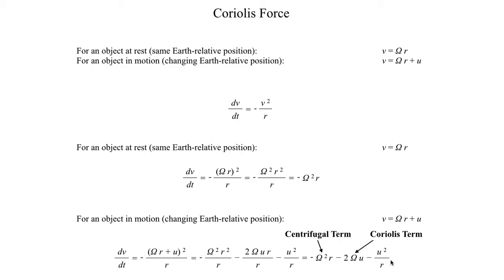The term u squared over r can be thought of as your motion's contribution to the centrifugal force, but when you think about values of u — maybe 10 meters per second if you're going in an all-out sprint, or 20-30 meters per second in a car — and r is basically a factor of the Earth's radius, this is going to be an extremely small term. It's not zero, but it's so small we can completely ignore it. The main two things to focus on are the centrifugal force due to the Earth's rotation and the Coriolis term we pick up by including this factor of u in v.